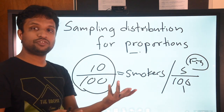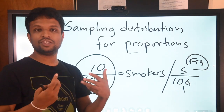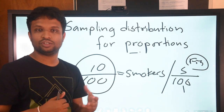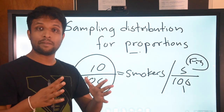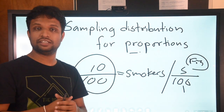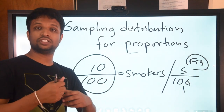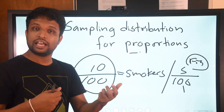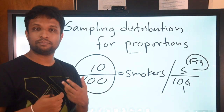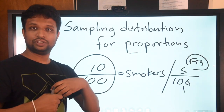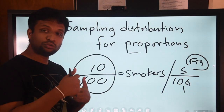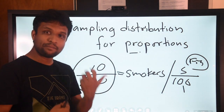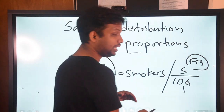From previous examples, we know how to calculate the sampling standard deviation or standard error and to make a sampling distribution for means. Now let's see how to make a sampling distribution for proportions.